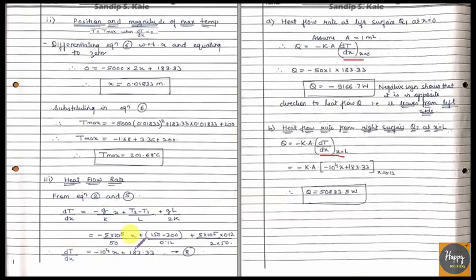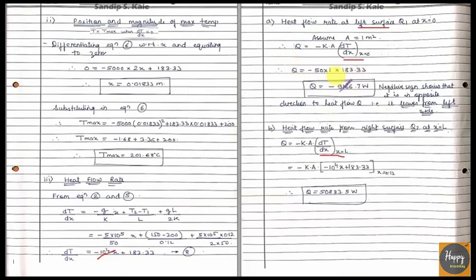For the heat flow at the left face (x = 0): Q = −k·A·(dT/dx)|_{x=0}. With area A = 1 m², putting x = 0 into equation 8 gives dT/dx = 183.33, so Q = −9166.7 W/m². The negative sign means heat leaves from the left face — it flows in the opposite direction.